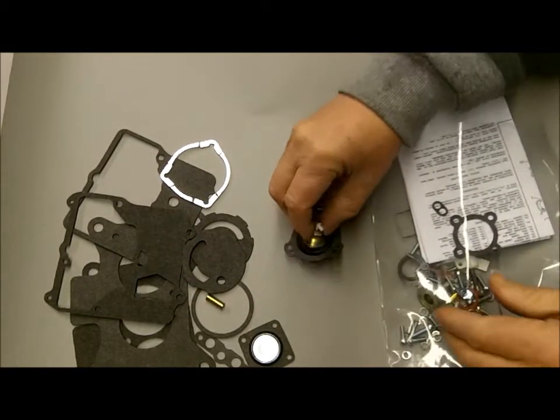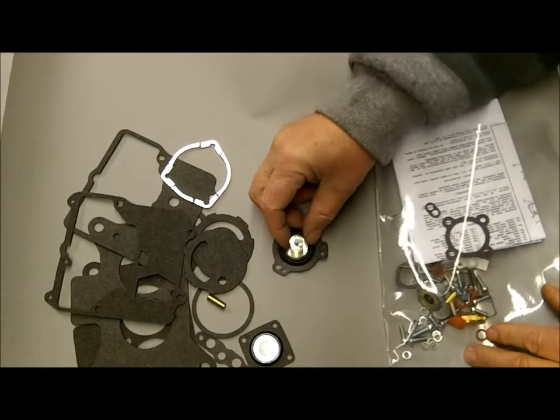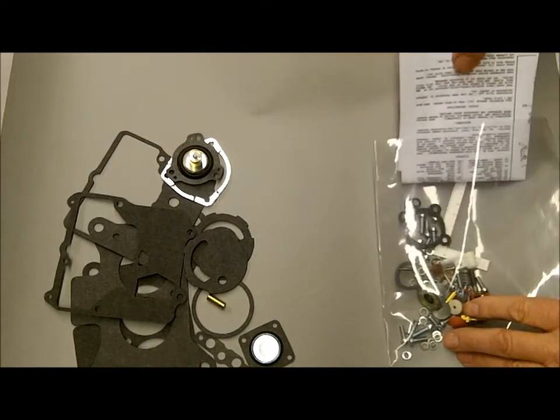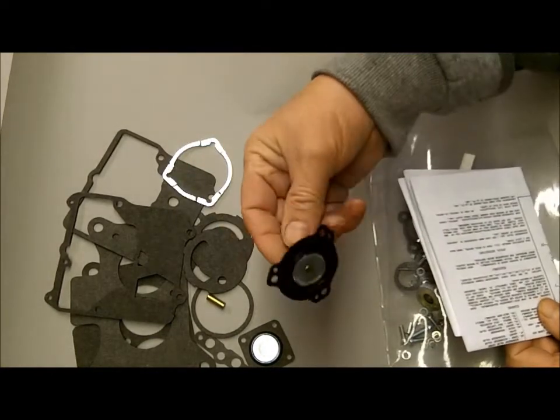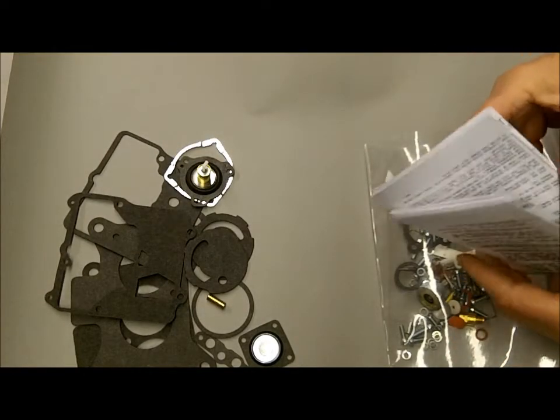And then here's your pull off, your choke pull off. Like I say, this is what will distinguish this carburetor from some of the others. This kit will work on most 2100s. The difference is we've included this diaphragm. We'll probably have a premium kit for the other ones also.